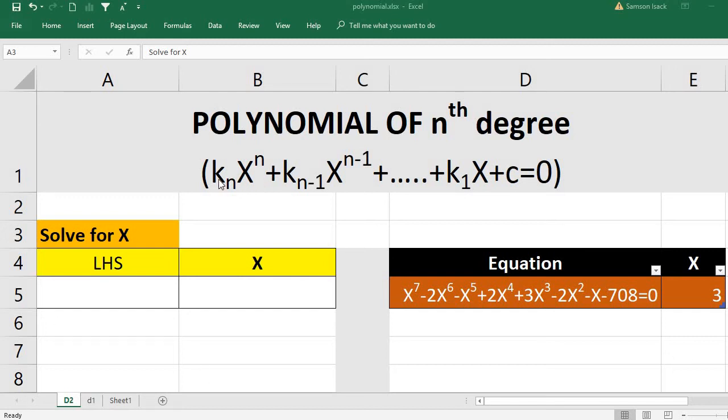What I have here is the constants k_n, k_(n-1), and so on. Similarly, I have x power n. So k_n into x power n plus k_(n-1) x power (n-1) plus and so on, to k_1 into x power 1, which is x. k_1 x plus constant. All these equal to 0.